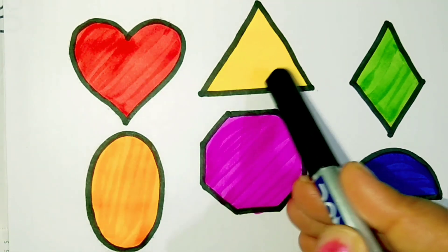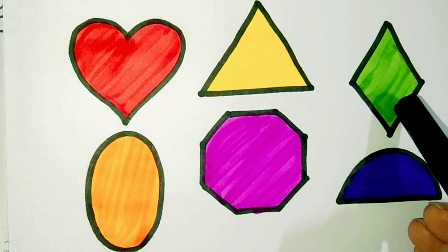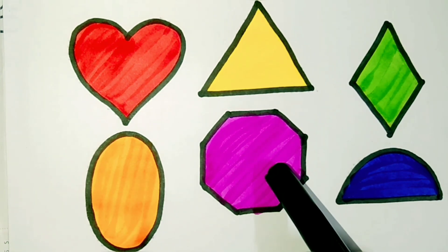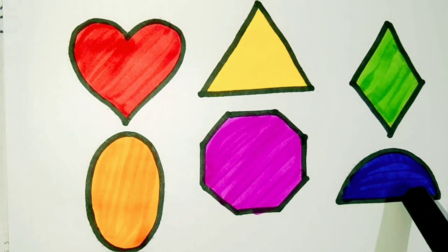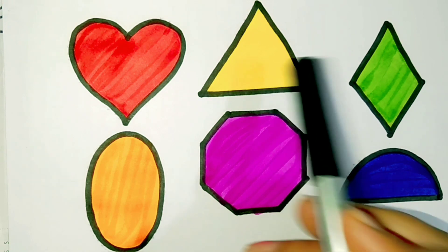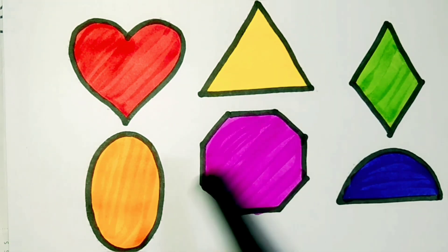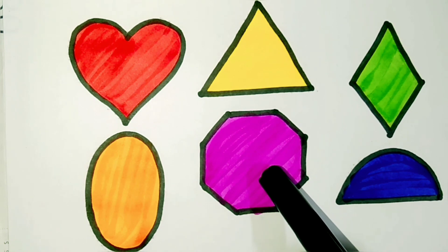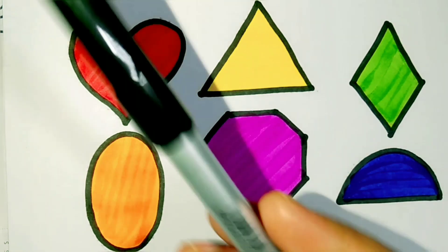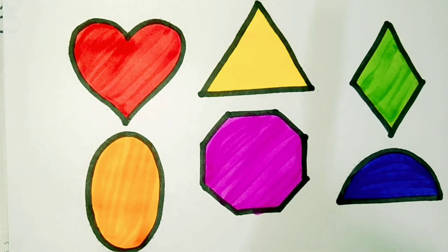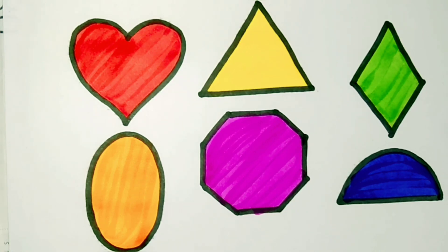Heart, triangle, diamond, oval, octagon, semicircle. Colors: red, yellow, green, orange, pink, blue, and this is a black color. Thank you for watching and please subscribe to my channel and like it.